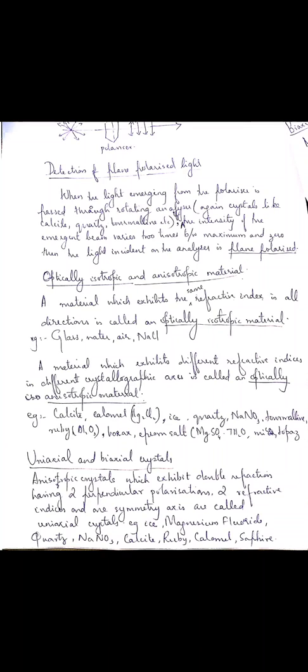Hi students. In the last class, we had begun our session on polarization. We stopped our discussion by explaining how we produce polarized light. Plane polarized light implies light which has its vibrations, or which has the vibrations of its electric field vector, confined to a single direction.